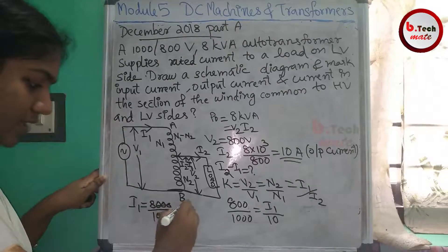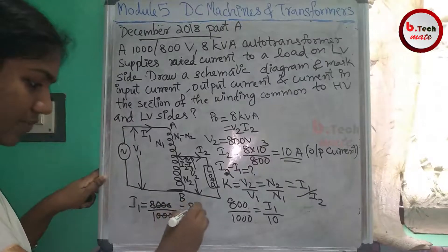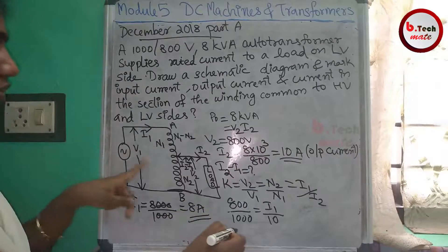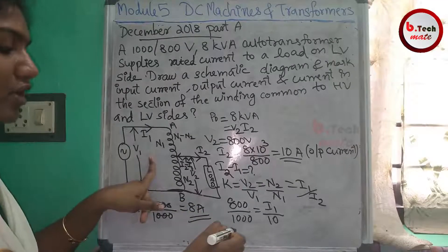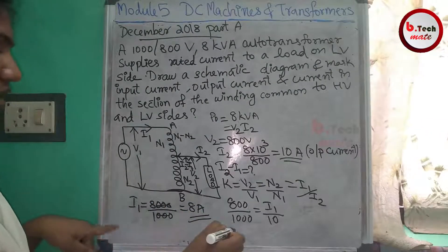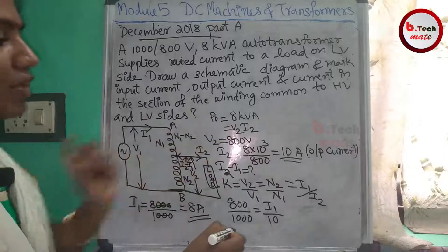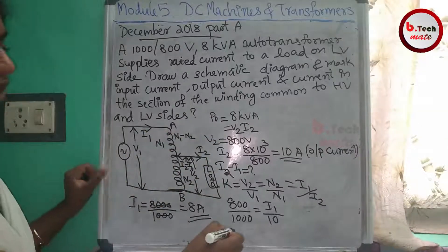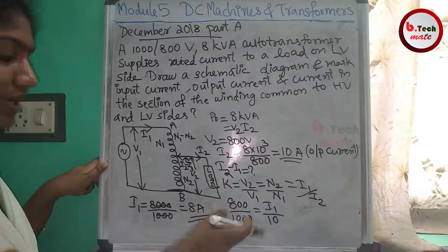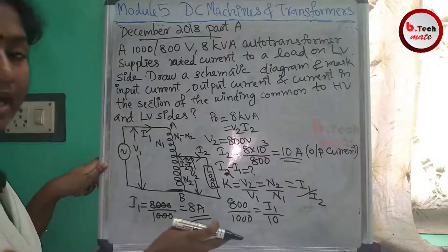I1 is 8A. The value of I1 is 8A and the value of I2 is 10A. Using the turns ratio K, we can confirm the value of I1.